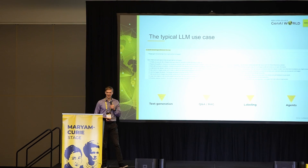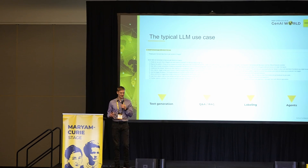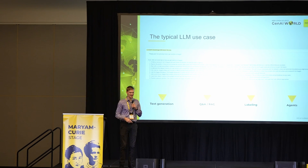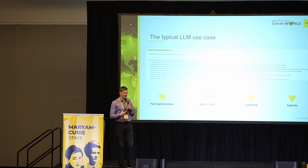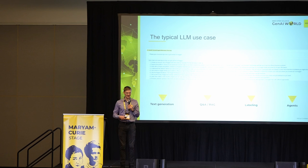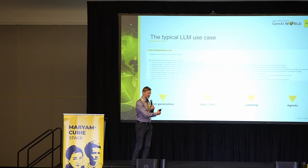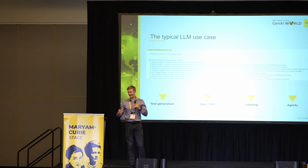We have heard today a lot of different things about use cases around LLMs, and usually we talk about generative use cases — text generation, RAG use cases, labeling, agents, and so on. But what I want to do now, close to the end of the day, is take a step back and figure out if we can also use LLMs for more classical use cases, like classification, that we have been doing over the last few decades.